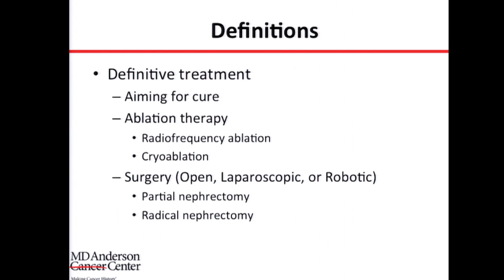There are different ways to achieve definitive treatment. We can do ablation therapy — you may have heard of radiofrequency ablation or cryoablation. The more standard way is surgery, which could be done either open through an incision, laparoscopically through small incisions, or robotically with the assistance of a robot. That could be either a partial nephrectomy, removing the portion of the kidney containing the tumor, or a radical nephrectomy, which is removal of the whole kidney.